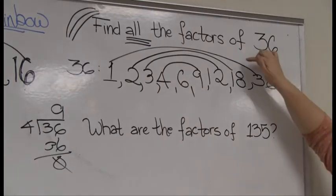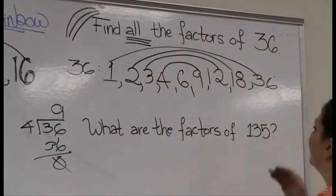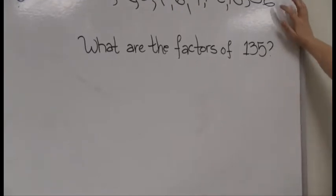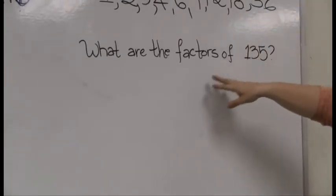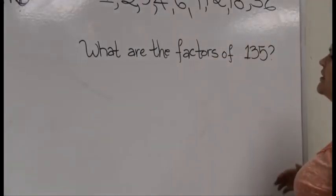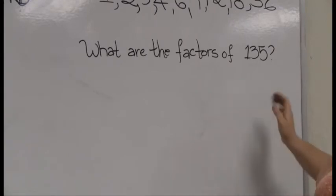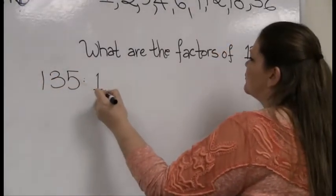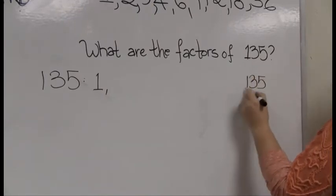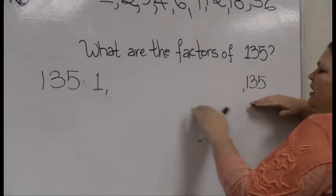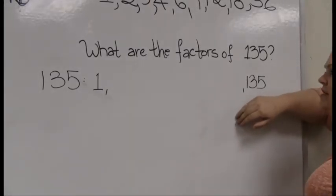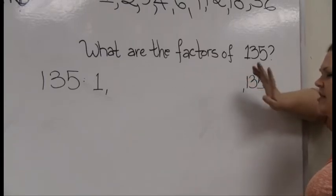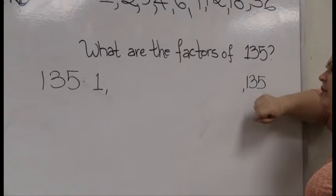What are the factors of 135? Sometimes people get confused when it doesn't say 'all' — but if it just says 'what are the factors,' assume they mean all of them. So 135: first factor is 1, last factor is 135. Even though this is a large number, 135 is odd, so I'm only going to find odd factors. It won't divide by 2, 4, 6, 8, or any even number — I'll go straight to the odds.